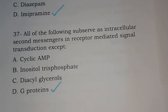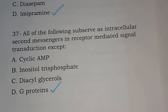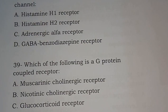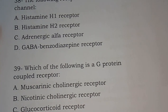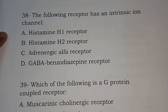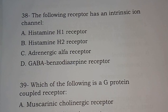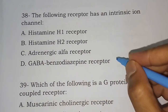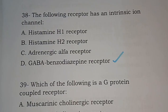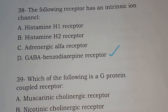Question 38: The following receptor has an intrinsic ion channel. Options are histamine H1 receptor, H2 receptor, adrenergic alpha receptor, GABA benzodiazepine receptor. The correct answer is option D, GABA benzodiazepine receptor. It has an intrinsic ion channel. This is very important — we will study the mechanism of many drugs acting through this receptor in coming videos.